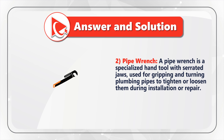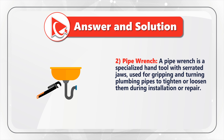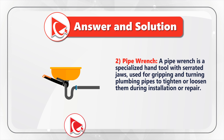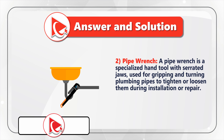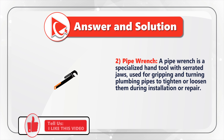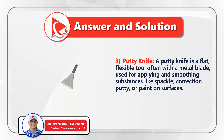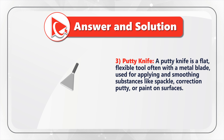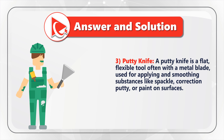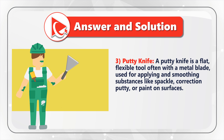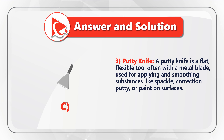Choice two matches the pipe wrench. The pipe wrench is a specialized hand tool used for gripping and turning plumbing pipes to tighten or loosen them during installation or repair. Description two matches image E. Description three matches the putty knife. The putty knife is a flat, flexible tool, often with a metal blade, used for applying and smoothing substances like spackle, correction putty, or paint on surfaces. Description three matches choice C.